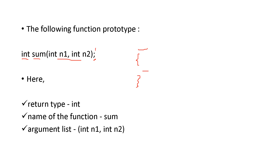In this example, the return type is int (that is, integer), the name of the function is sum, and the arguments are n1 and n2, which are also integers.